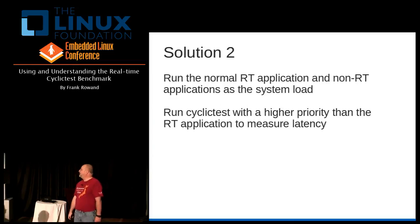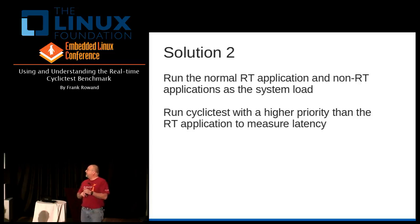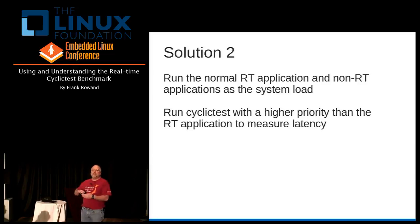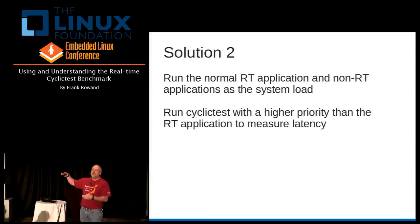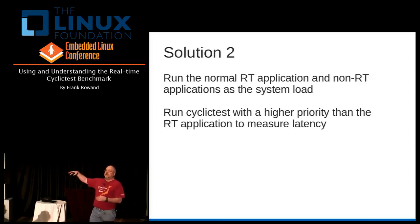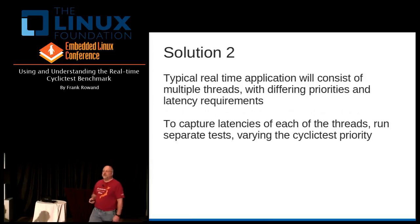You can run your normal real-time application as your load, and then run cyclic tests with a higher priority than your real-time application. So cyclic tests always get scheduled before your real application. It'll measure a maximum latency that your application will then see in the real world when cyclic test is not running. It's a very easy workaround and it works very well.